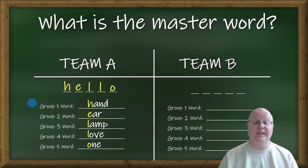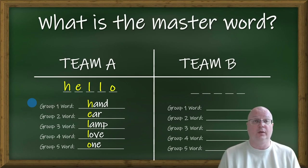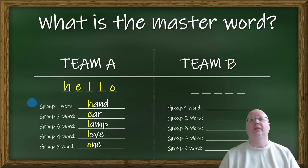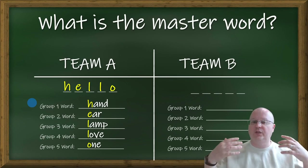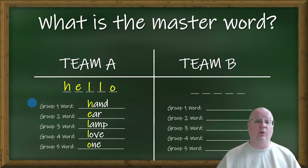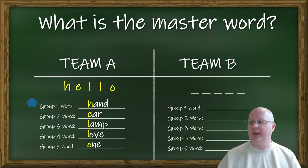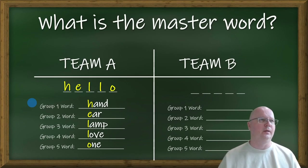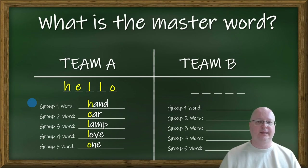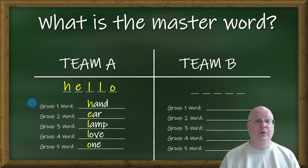The first team who finishes fastest gets a point or a round of applause — it's really up to you how you want to do it. Maybe they could have a group captain, someone who can coordinate between all the team members. So this is it — this is how you play this game.